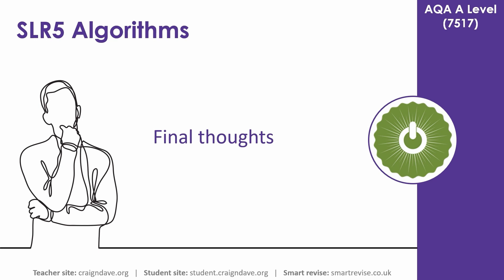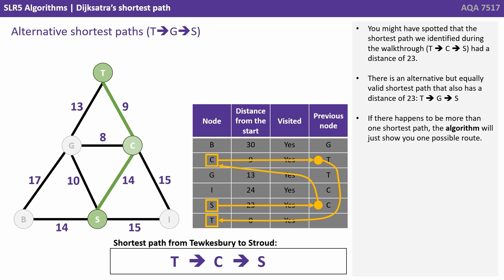Let's consider a few final thoughts on this shortest path algorithm. You might have spotted that the shortest path identified during the walkthrough was T, C, S with a distance of 23. But there is an alternative but equally valid shortest path also with a distance of 23, and that's T, G to S. If there happens to be more than one shortest path, the algorithm will just show you one possible route when you output.